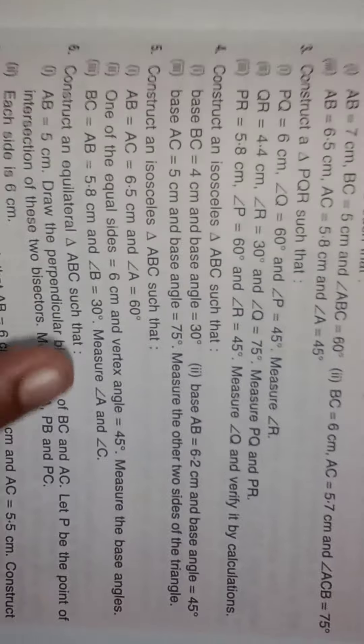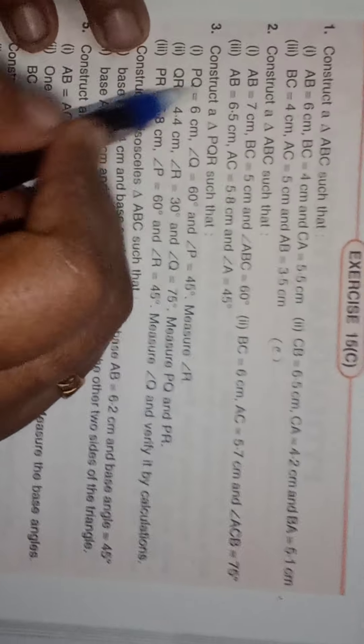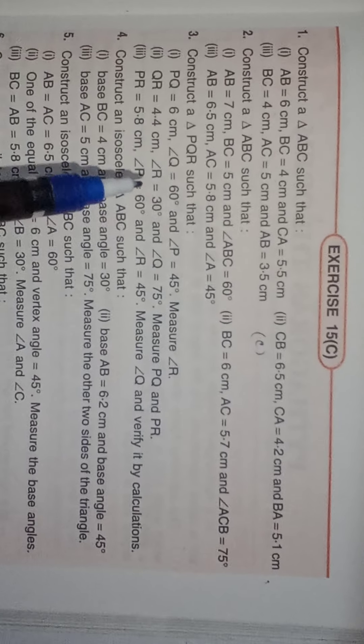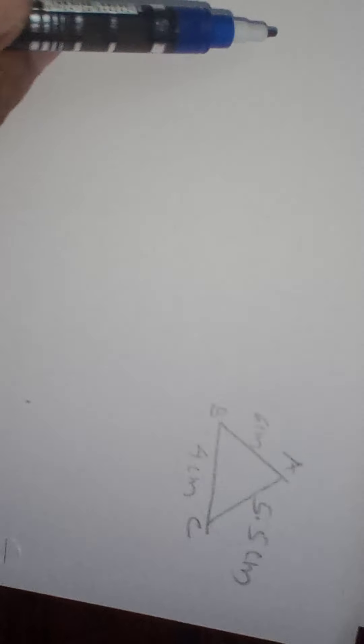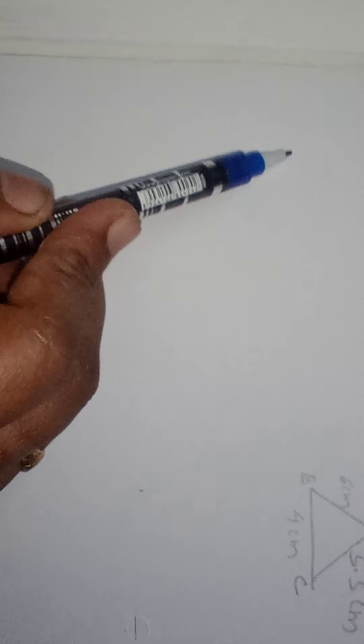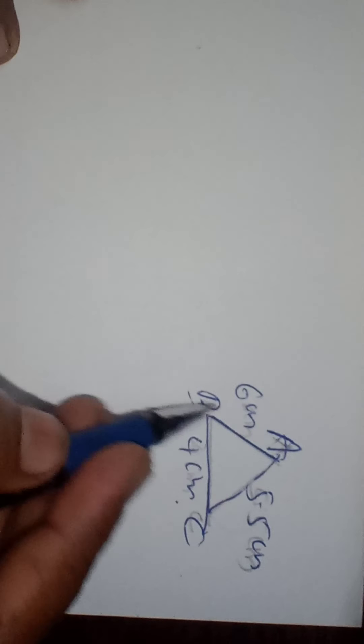First question: construct triangle ABC such that AB equals 6 centimeters, BC equals 4 centimeters, CA equals 5.5 centimeters. For any type of construction question, you have to draw a rough figure first. There is no need for a scale in the rough figure. Write the measurements given in the question: AB is 6 centimeters, BC equals 4 centimeters, CA equals 5.5 centimeters.